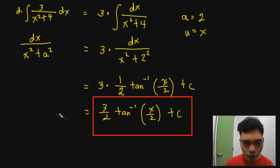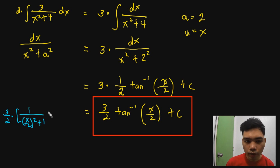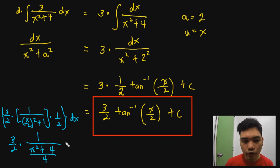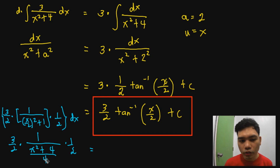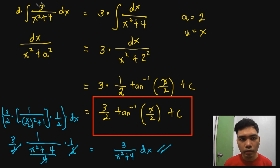Checking this answer using differentiation: copy the constant 3 halves, then differentiate the inverse tangent of x over 2. That gives 1 over (x over 2) squared plus 1, times the derivative of x over 2 which is one half. Simplifying, we get 3 halves times 1 over (x squared plus 4 over 4) times one half. Rewriting 4 over x squared plus 4 and canceling the 2 in the denominator gives 3 over x squared plus 4. This matches our original integrand, confirming the answer is correct.